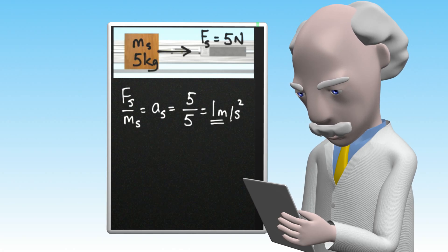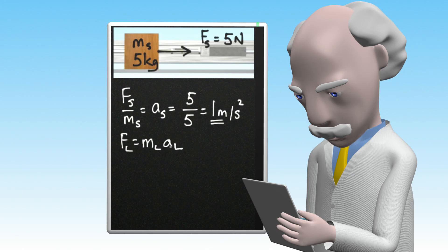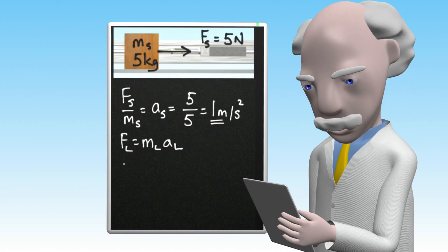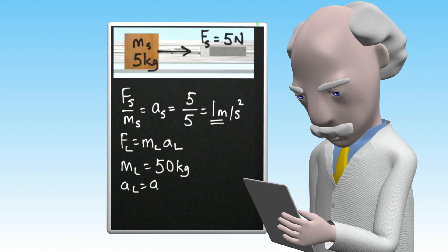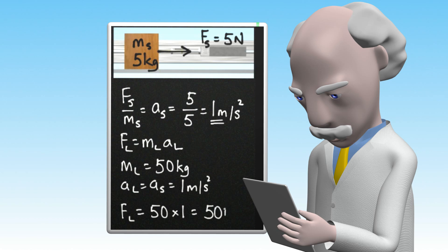To calculate the force required to accelerate the large block at 1 meter per second squared, we use the second law in the form force equals mass times acceleration, where the subscript l indicates that we are referring to the large block for this part of the calculation. So taking the mass of the large block as 50 kilograms and the acceleration as 1 meter per second squared, this gives the force we need to apply to the large block equal to 50 kilograms times 1 meter per second squared, which gives 50 newtons.